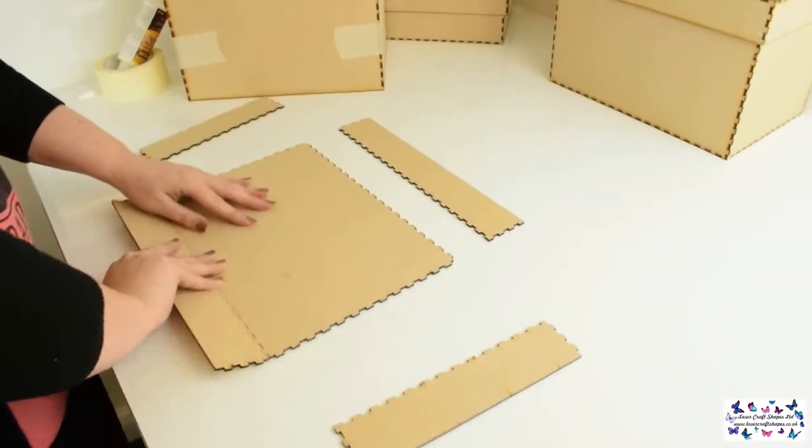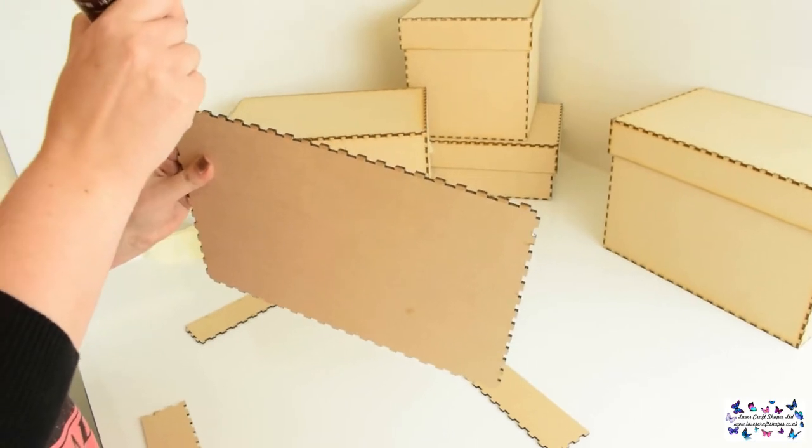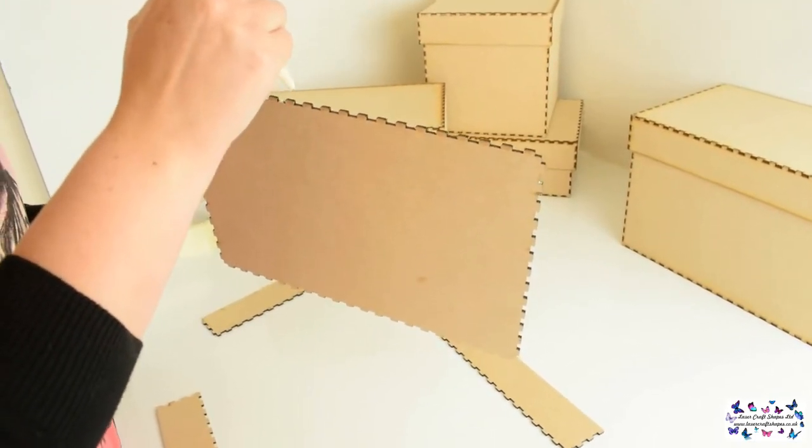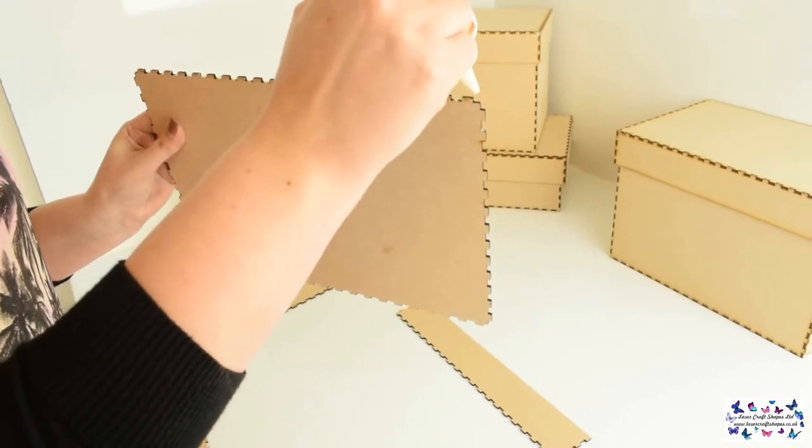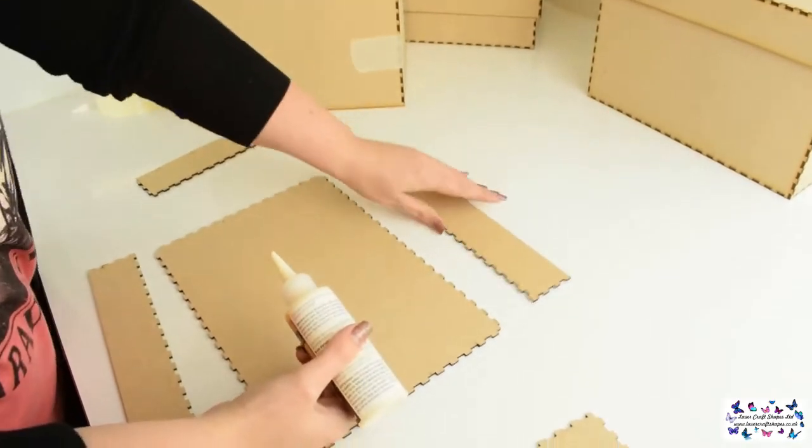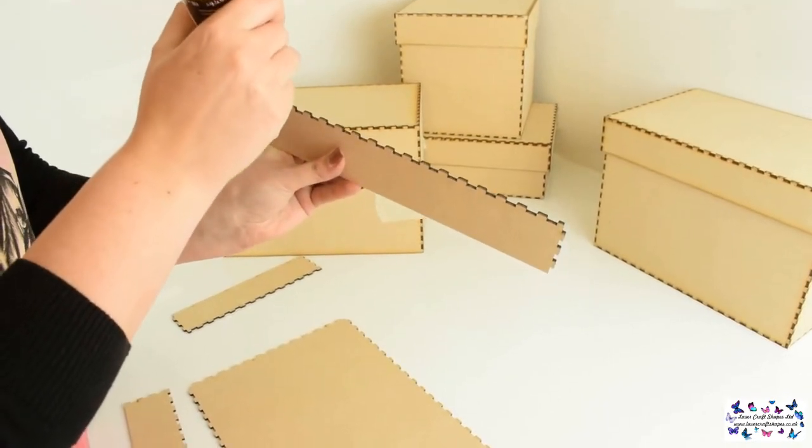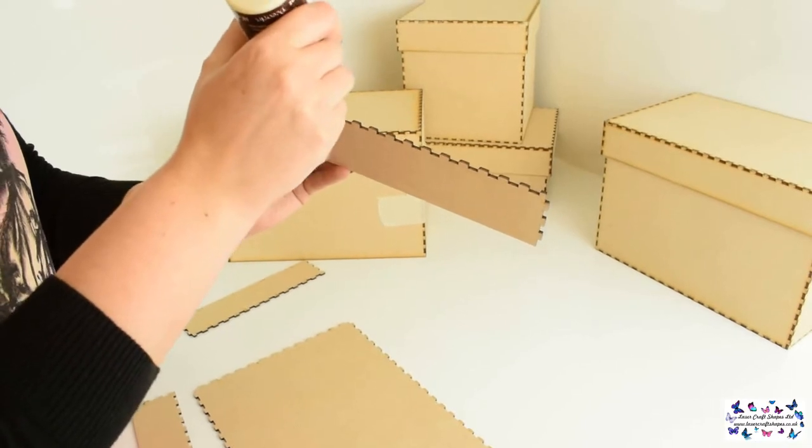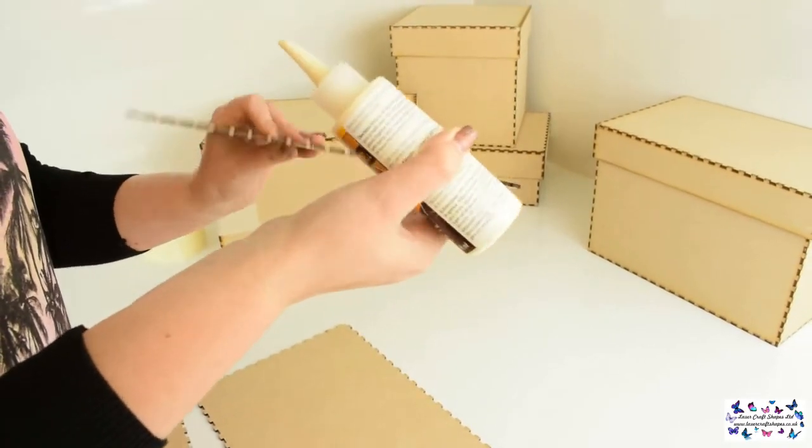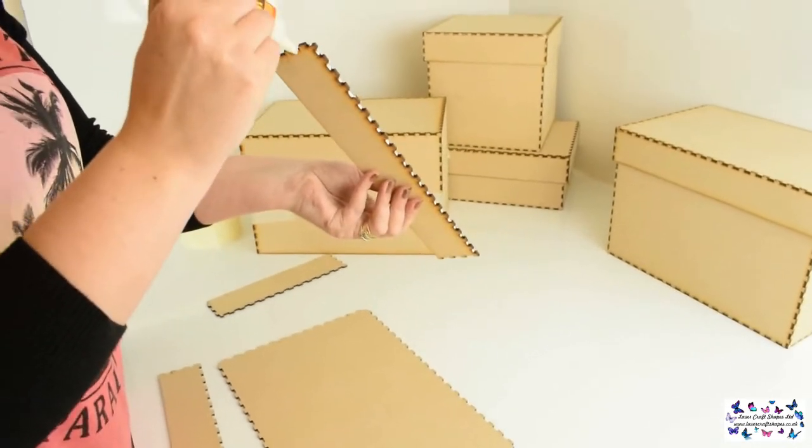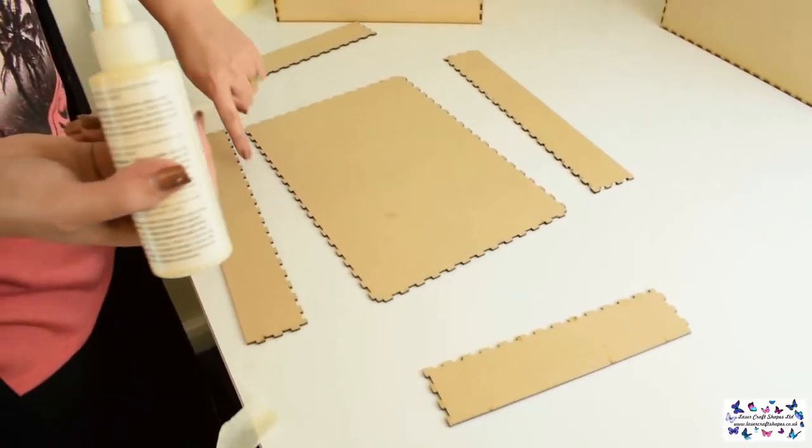Take our pieces apart again and take our wood glue and apply this again to all the lower teeth areas. Repeat this around all the other edges and move on to our side pieces. Apply your wood glue. Then repeat this on all the other side pieces and all the teeth areas.